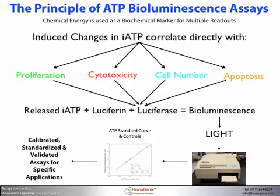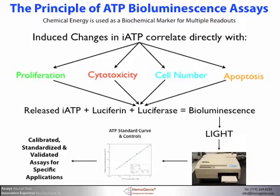The principle of measurement for all of these assays is shown in this slide. All living cells produce chemical energy in the form of intracellular ATP. When cells proliferate or are inhibited from proliferation by cytotoxic drugs, changes in the ATP concentration occur that correlate directly with cell proliferation, cytotoxicity, cell number, and even apoptosis. After incubation of the cells, the ATP is released by cell lysis, and this reacts with the luciferin and luciferase reagent to produce a bioluminescence signal in the form of light, which is measured in a plate luminometer. But before any sample is measured, the assay is calibrated and standardized.